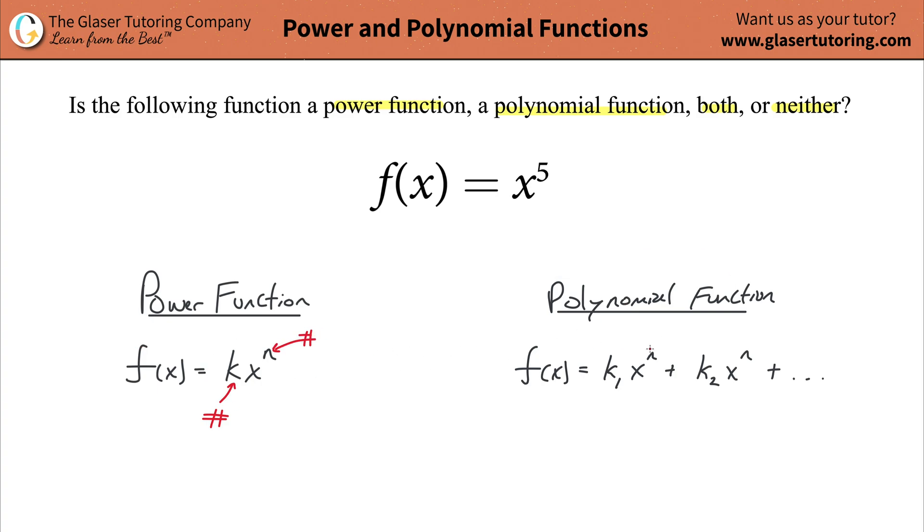basically one term, where the polynomial function can have one term or could have two, three, four, or some other non-infinite number of terms. So when we take a look at this function that's given, we see x to the fifth. Now you might be thinking, well that's great, I